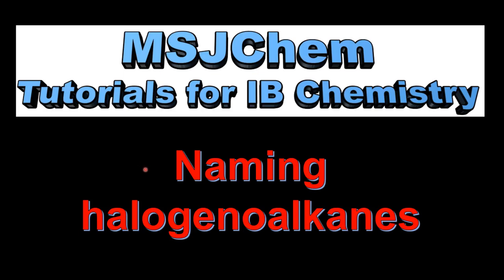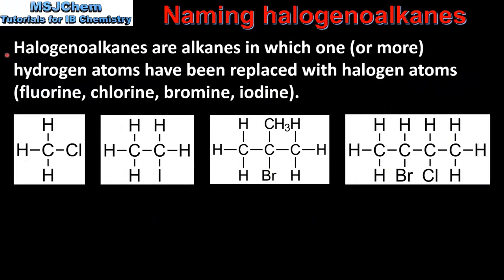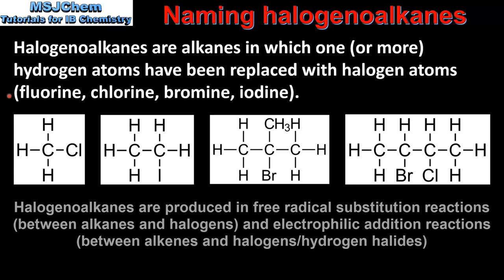This is MSJChem. In this video I'll be looking at naming halogeno alkanes. Halogeno alkanes are alkanes in which one or more hydrogen atoms have been replaced with halogen atoms. The halogens are fluorine, chlorine, bromine and iodine.